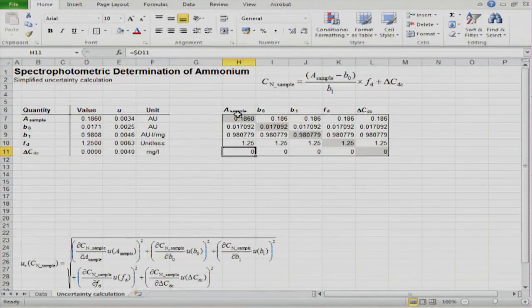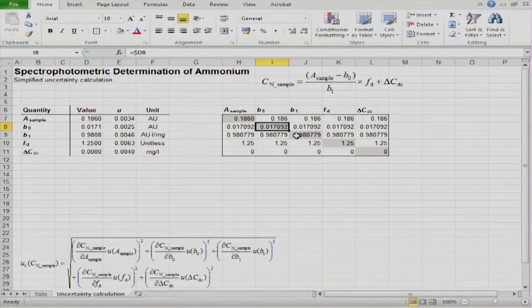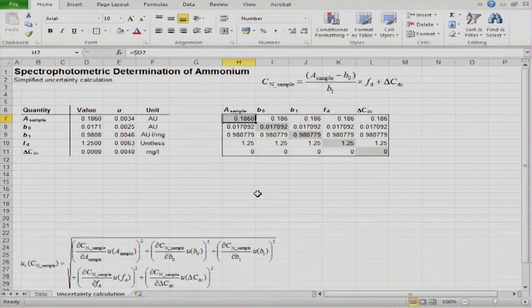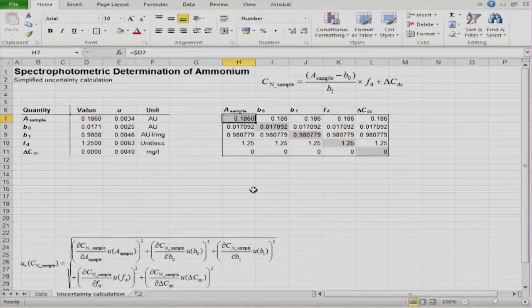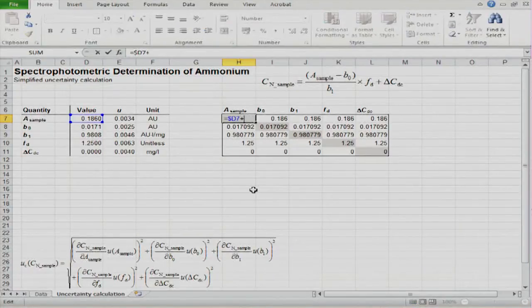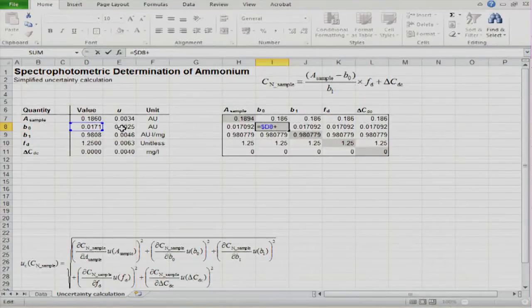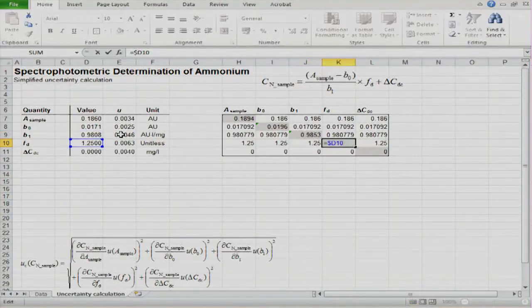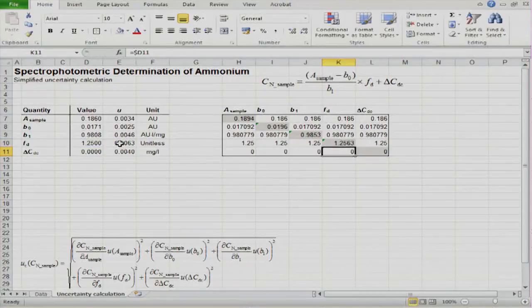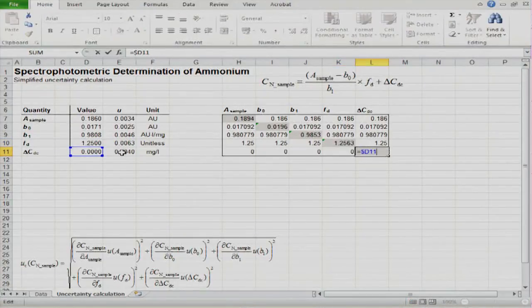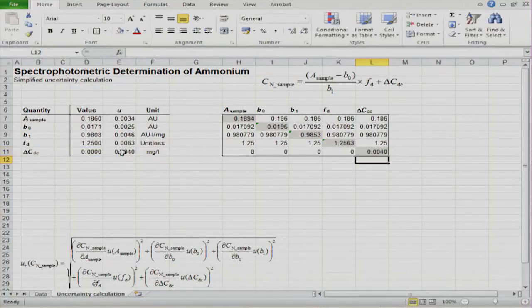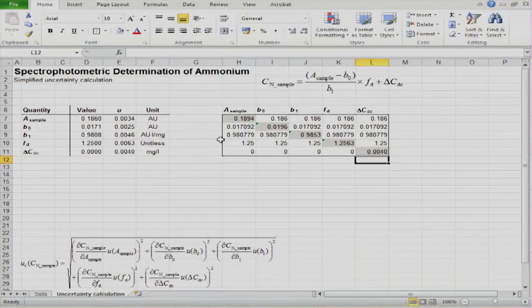We see now that in each of the cells here, we basically have the same quantities that in the corresponding cell in this column here. Now, the diagonal elements come into play. To each of these diagonal values, we will now add the standard uncertainty of the respective input quantity. Here we add the standard uncertainty of A sample, here B0, here B1, here Ft, and here delta Cdc.